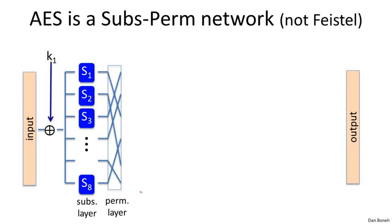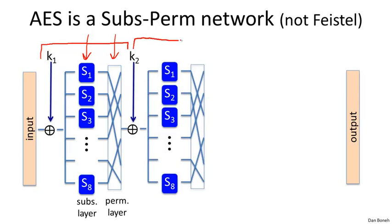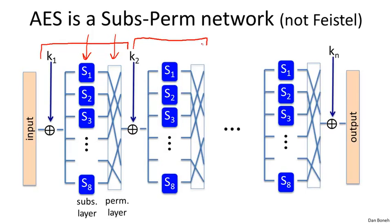And the network works as follows. So here we have the first round of the substitution permutation network, where the first thing we do is we XOR the current state with a round key, in this case the first round key. Then we go through a substitution layer where blocks of state are replaced with other blocks based on what the substitution table says. And then we go through a permutation layer where bits are permuted and shuffled around. And then we do this again. We XOR with the next round key, we go through a substitution phase, and we permute the bits around. And so on and so on and so forth, until we reach the final round where we XOR with the very last round key, and then out comes the output.